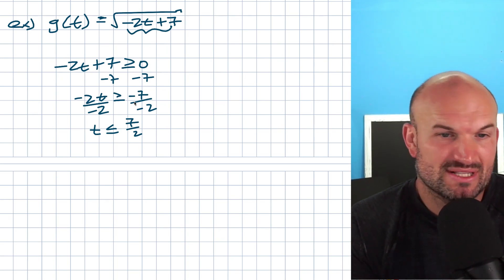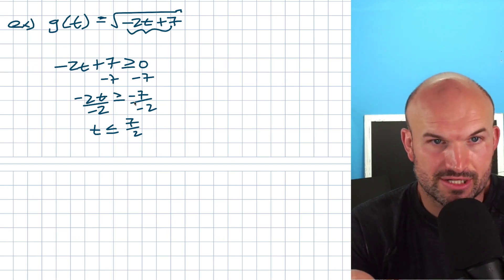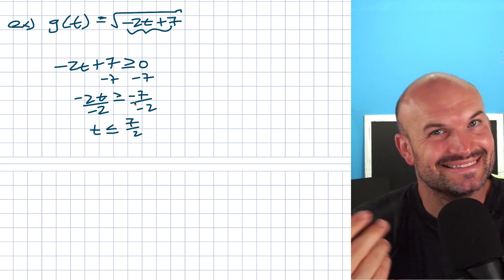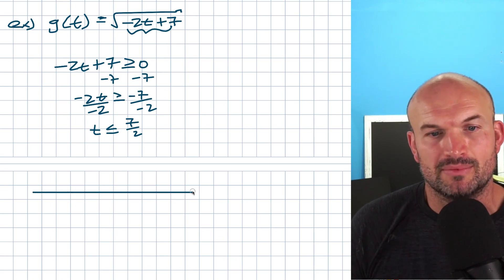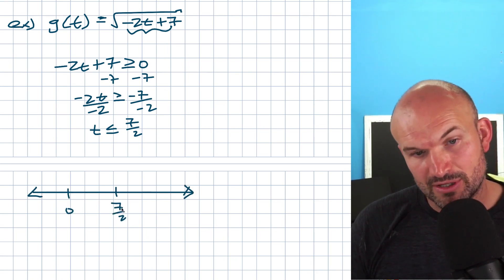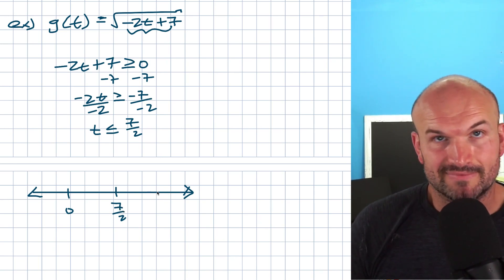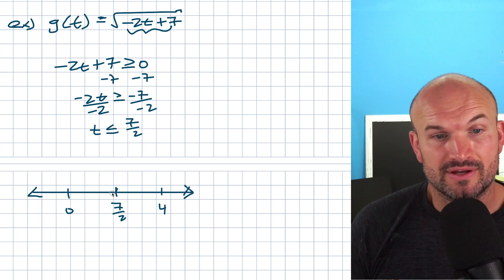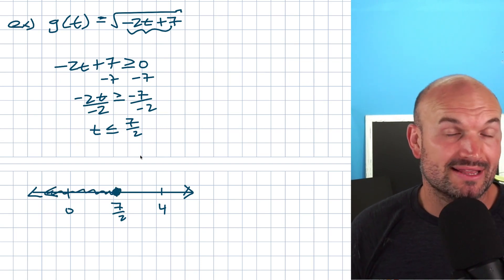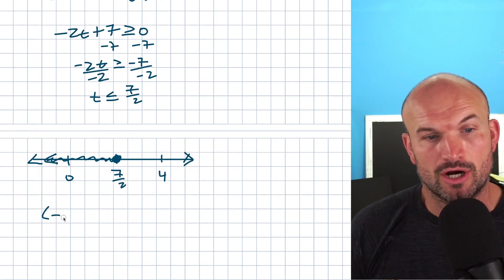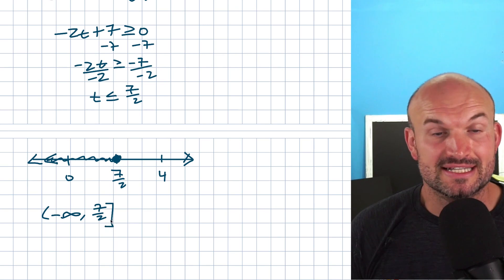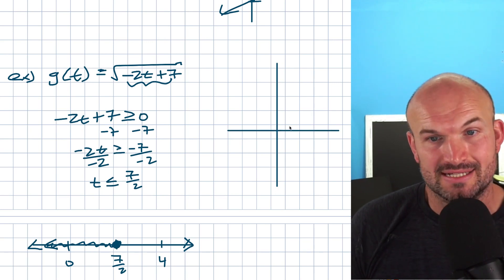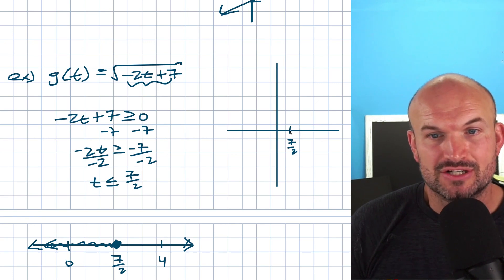To verify — pick an easy number less than 7/2, like zero. Plugging in 0: (-2)(0) + 7 = 7, and √7 ≈ 2.646, which works. On a number line, 7/2 is included (filled circle) and all values go to the left toward negative infinity. In interval notation, the domain is (-∞, 7/2]. The graph looks like the square root function reflected about the y-axis, starting at 7/2 and going left.